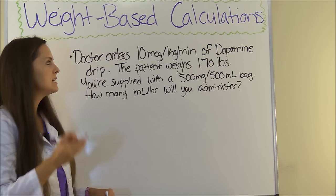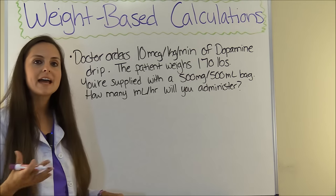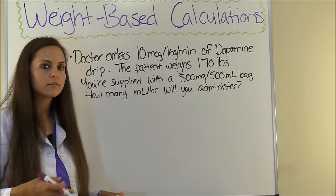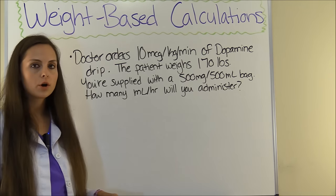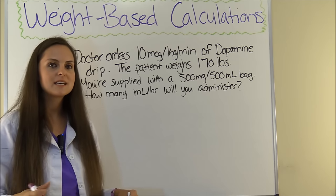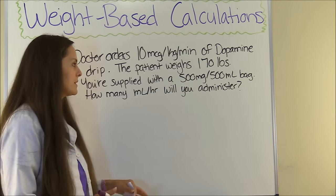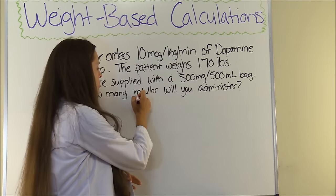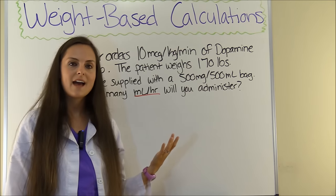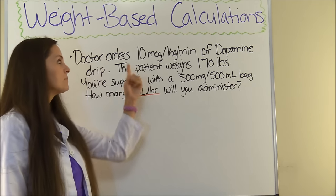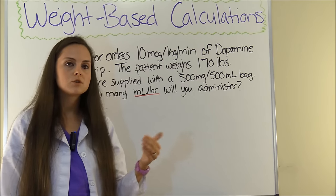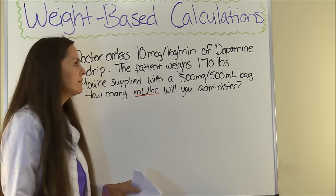This problem says: doctor orders 10 micrograms per kilogram per minute of a dopamine drip. The patient weighs 170 pounds. You're supplied with a 500 milligram per 500 milliliter bag. How many milliliters per hour will you administer? This problem has more converting steps — we need to convert minutes to hours, and the order is in micrograms while the bag is in milligrams, so we'll need to convert micrograms to milligrams. Our goal is milliliters per hour.